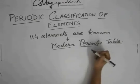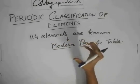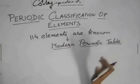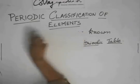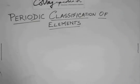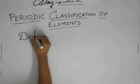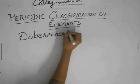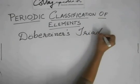So what happened is that scientists tried to find some kind of similarities or repetition of properties in the elements. So the first person to do this classification was Dobereiner, and he classified them as Dobereiner's Triads.